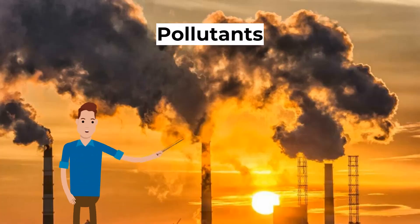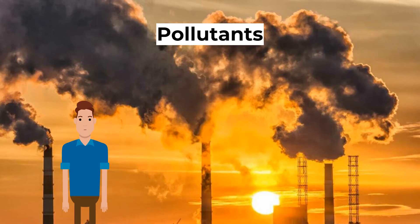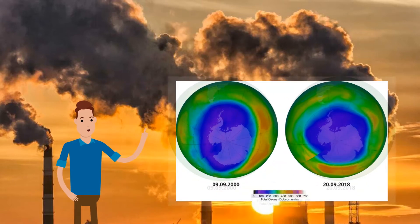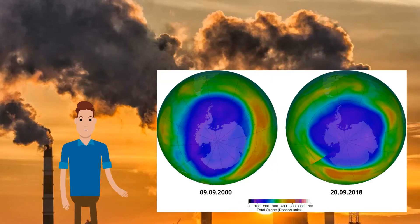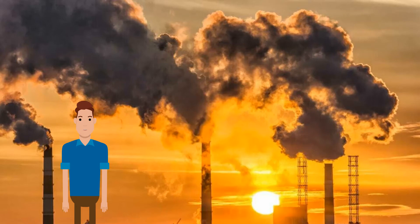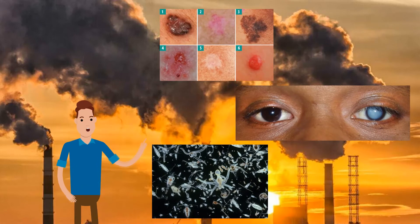Secondly, let's talk about pollutants. CFCs are destroying the ozone layer that protects us from the sun's harmful ultraviolet radiation — mostly UVB rays. Large doses of UVB cause skin cancer, eye cataracts, crop damage and harm to plankton.